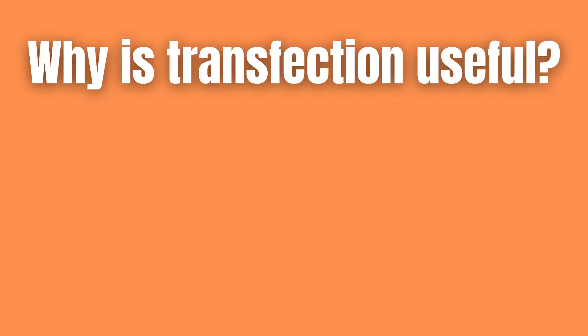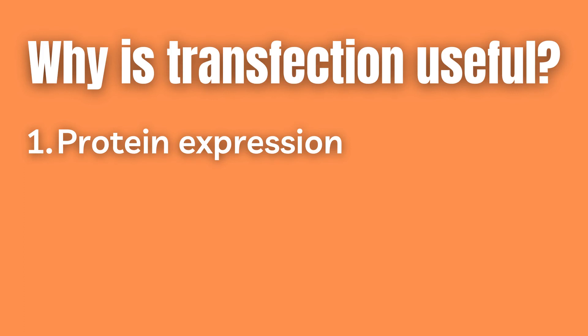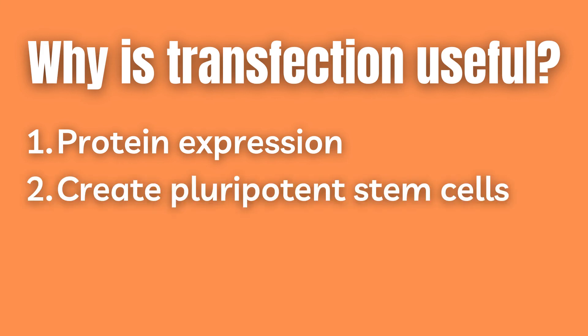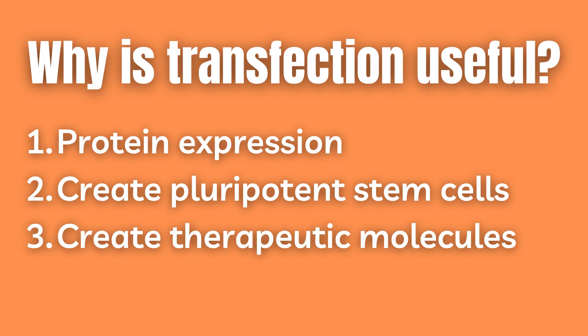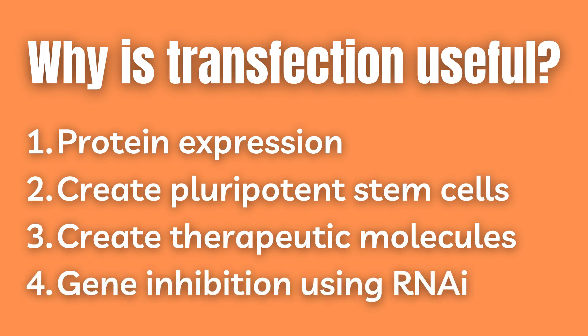So how is transfection actually useful? It is most commonly used to express a protein of interest in cultured cells through the use of a plasmid vector or mRNA. One can also use transfection to express protein in eukaryotic cells, allowing for proper folding and post-translational modifications to take place. In addition, transfection can also be used to create pluripotent stem cells and various therapeutic molecules. Finally, transfection is also used as a way to cause gene inhibition, done by using RNA interference or RNAi.